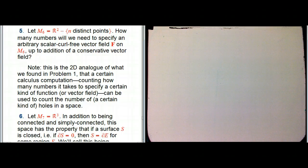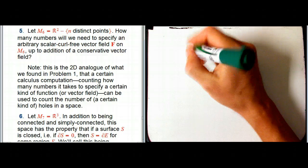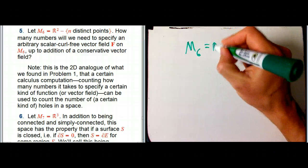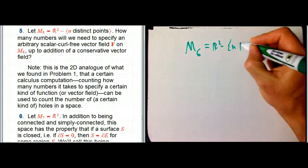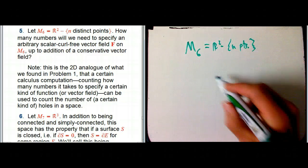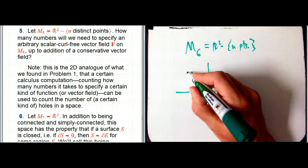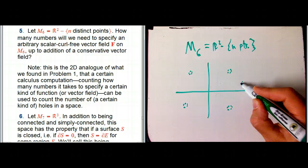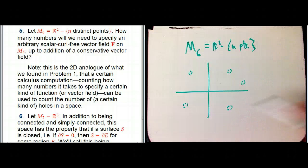Let's take a look at problem five. You might want to just pause the video for a minute and read problem five here. We're up to the sixth, well it's really the seventh because we start with M₀ in our sequence of interesting spaces. We take R² and we delete N, let's say N equals five just to be fun, five points.